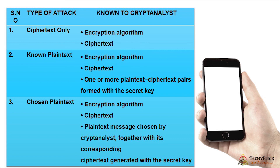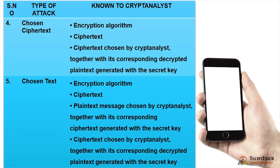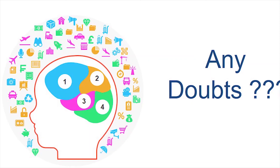Third attack — chosen plaintext: the cryptanalyst has the encryption algorithm, ciphertext, and a plaintext message chosen by the cryptanalyst together with its corresponding ciphertext generated with a secret key. Fourth — chosen ciphertext: ciphertext chosen by the cryptanalyst together with its corresponding decrypted plaintext generated with the secret key. Fifth — chosen attack: the cryptanalyst has both chosen plaintext and chosen ciphertext.